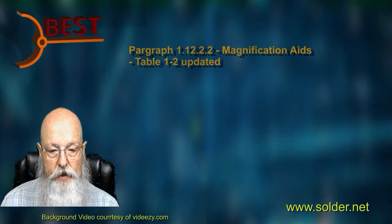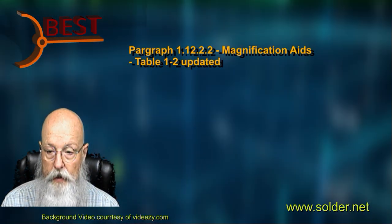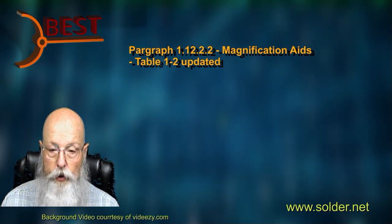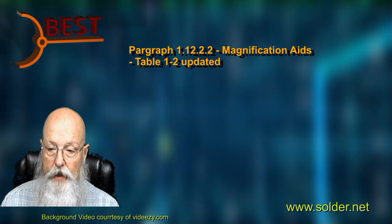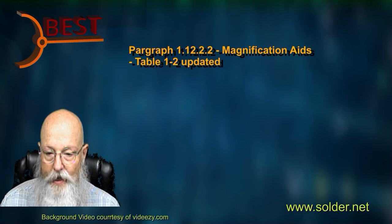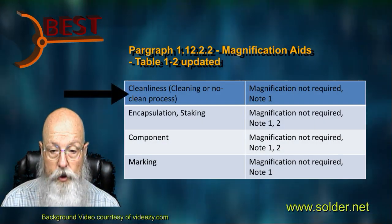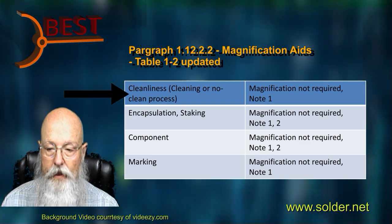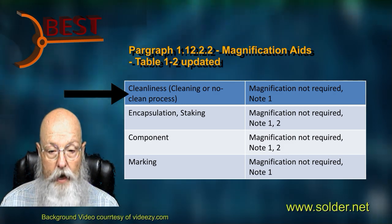The next relatively minor change is in Table 1-2 of the magnification aids. In Revision D, there were two lines — one for cleanliness with or without a cleaning process, and one for no-clean processes. The criteria were identical, so it didn't make sense to have them split out. Whether or not you clean the boards or use a no-clean process, the use of magnification for inspection for cleanliness is not required.